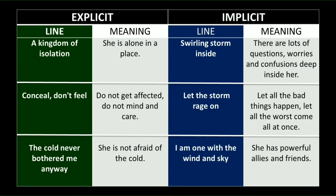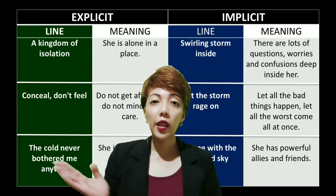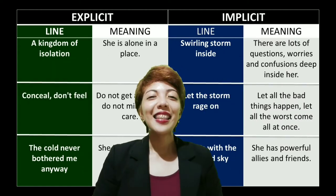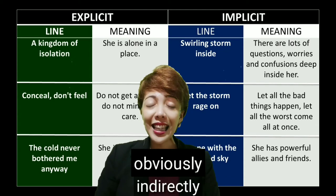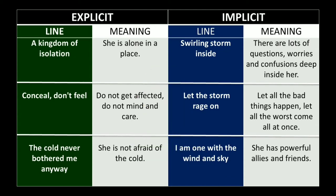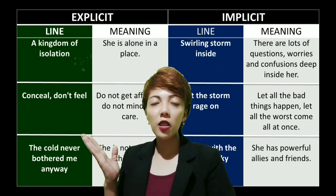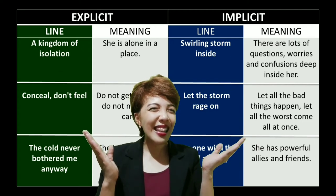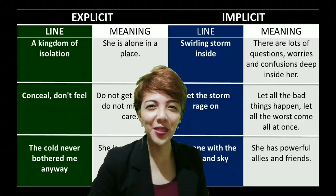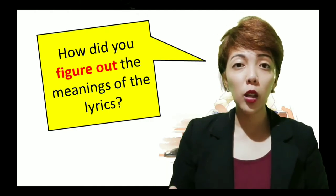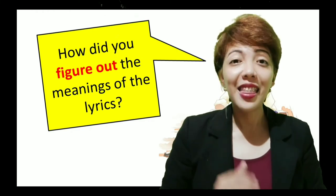Are you ready? For our first question, which of these two groups of lyrics did you find much easier and more difficult to understand and know the meaning? This group is much easier to know the meaning, while this one is more difficult to understand. Second question, which of them obviously and indirectly states what the singer feels? This column obviously states what the singer feels, while the second group indirectly states what the singer feels. Good job! Third question, how did you figure out the meaning of the lyrics? If you think that it's because of the clues, words, or signals that are used in the sentence or lyrics, then you're right! Awesome!